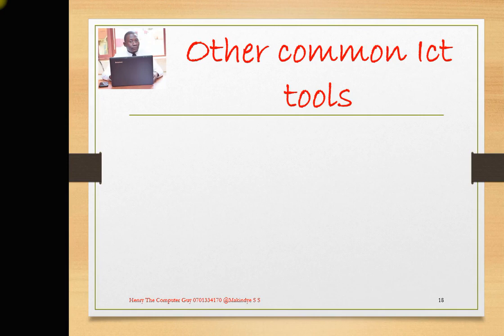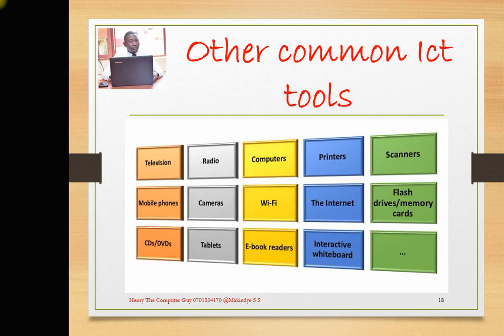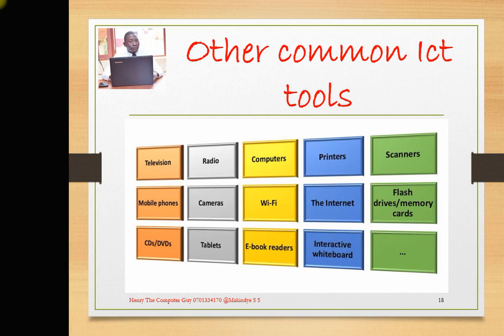Other common ICT tools are summarized in the table below. You can have the television, the mobile phone, CDs and DVDs — CD stands for Compact Disc and DVD stands for Digital Versatile Disc — the radio, cameras, tablets, computers, Wi-Fi (Wireless Fidelity), ebook readers, printers, the internet, interactive whiteboards used in international schools, scanners, flash drives, memory cards, and many other tools.